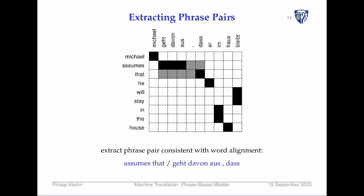Then we extract phrases from the alignment. Each of these alignment blocks already represents a phrase translation. But we also want to have bigger phrases, so we draw bigger boxes — for example, a bigger box that creates a translation covering 'assumes that' and 'Geht davon aus' together.